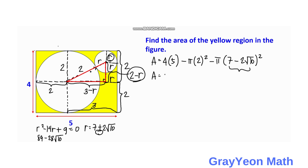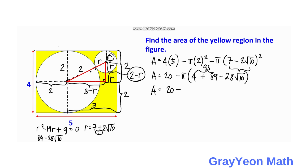Simplifying further, the area equals 20 minus pi times 4 minus pi times (89 minus 28 root 10). Combining the pi terms: 4 plus 89 equals 93, so the area equals 20 minus pi times (93 minus 28 root 10) square units. That is our answer.